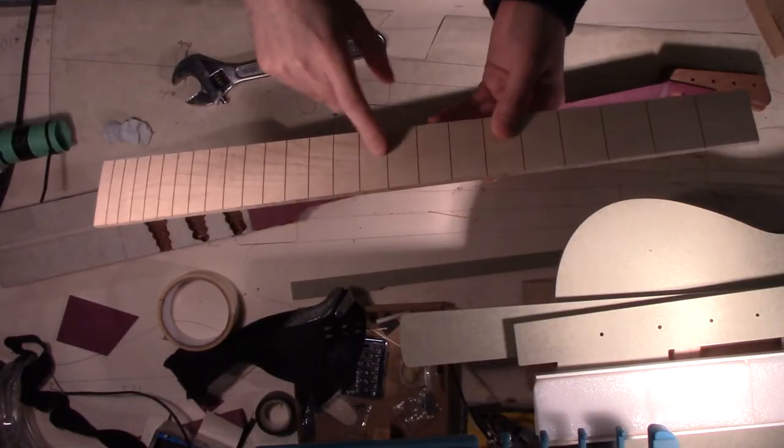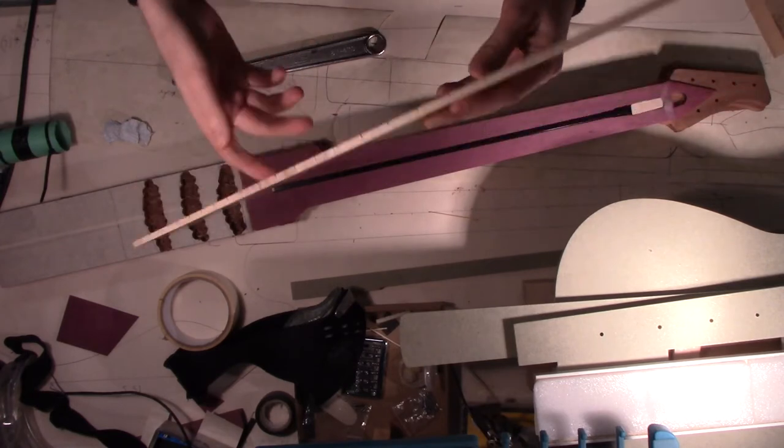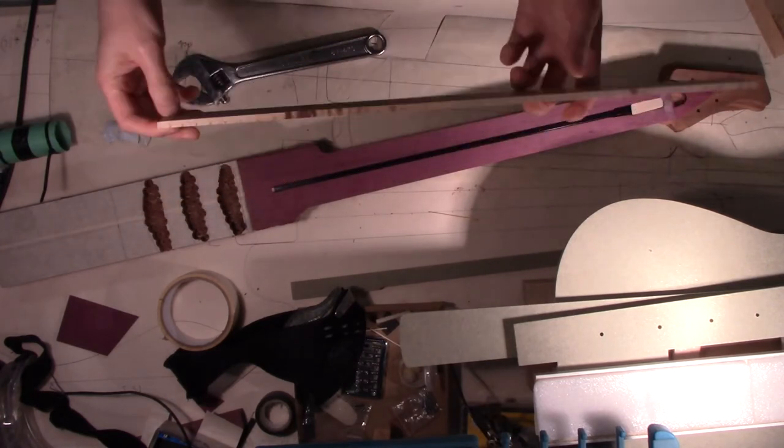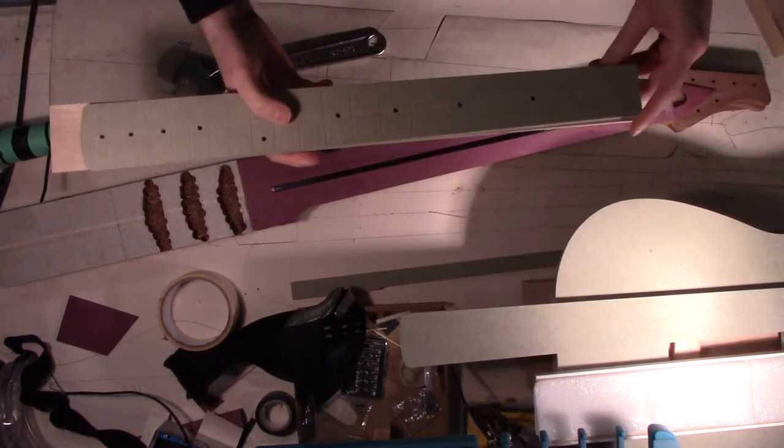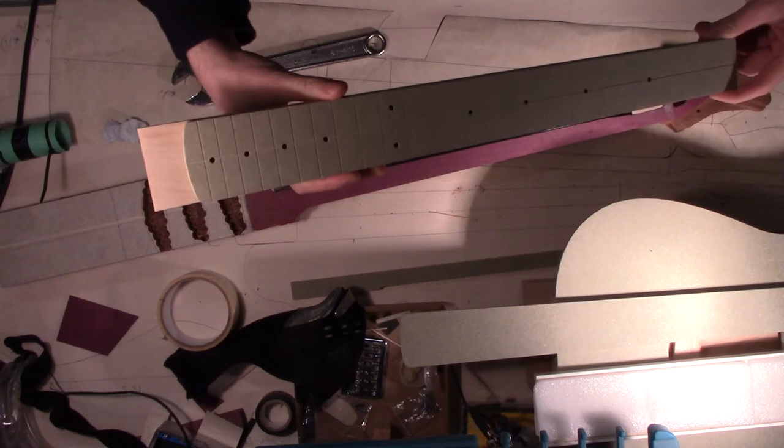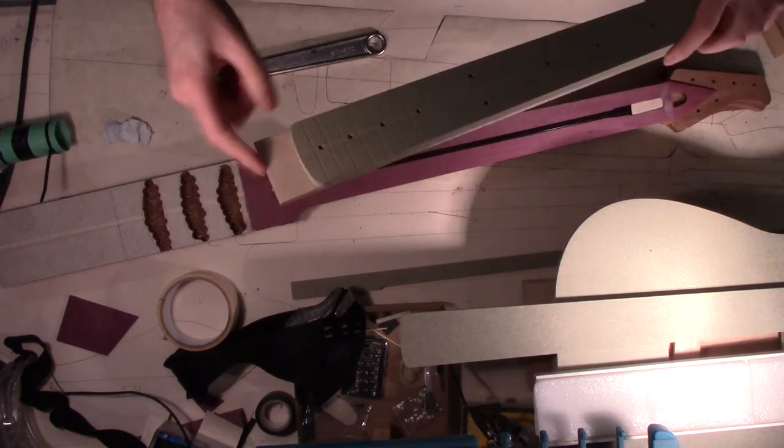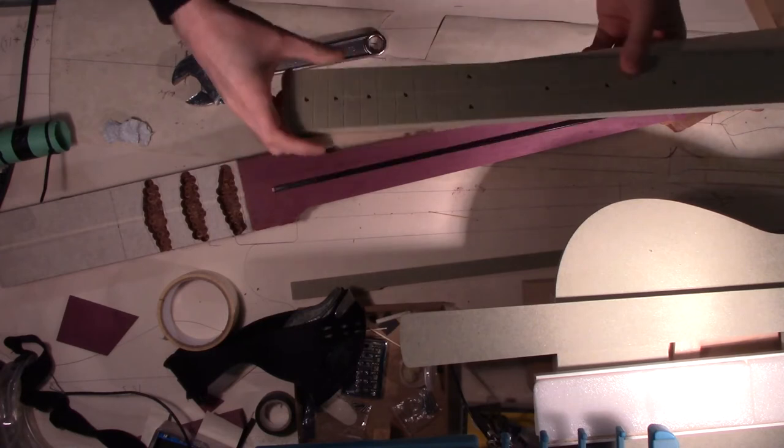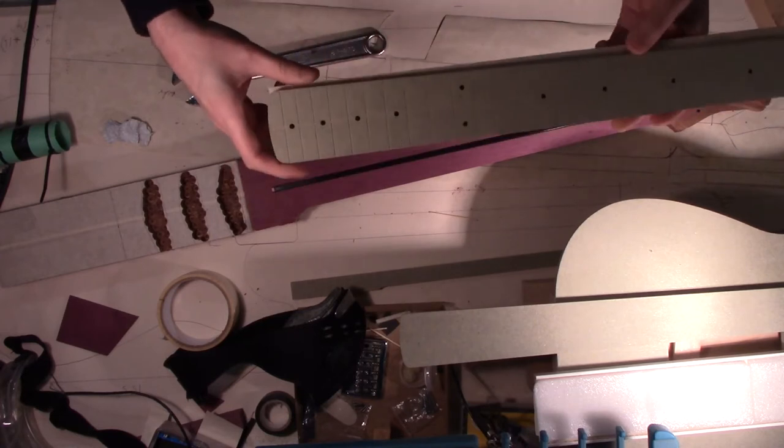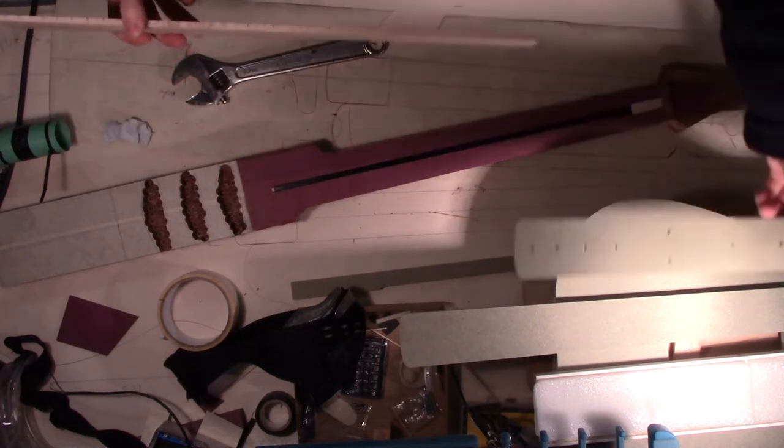I've now finished trimming the neck down to the template. Well, I had to move the template, of course, because the template's for a 21-fret strat neck, and I'm using a 24-fret neck. So I had to move the template to line it up and route that and then do the other side. But that's worked nicely.